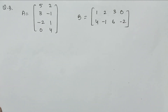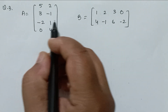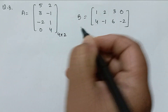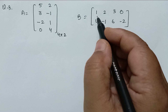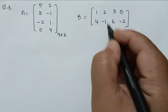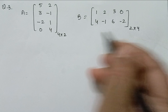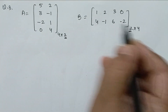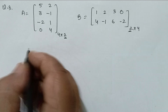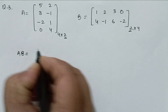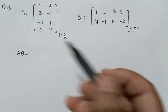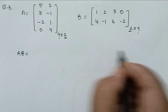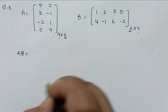In this example, matrix A has 4 rows and 2 columns, so its order is 4×2. Matrix B has 2 rows and 4 columns, so its order is 2×4. Since the number of columns of A equals the number of rows of B (both are 2), we can multiply these two matrices. The resulting matrix AB will have order 4×4, with 4 rows and 4 columns.